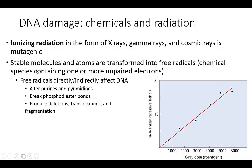What happens is that stable molecules and atoms are transformed into free radicals — a chemical species with one or more unpaired electrons. They can directly attack the DNA, or they can also indirectly affect DNA by altering purines and pyrimidines and breaking different types of bonds. This can lead to major problems such as deletions, translocations, and fragmentation of the DNA.